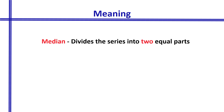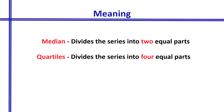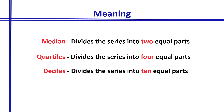First of all, the median is the breaking point that divides the series into two equal parts. Quartiles are those breaking points that divide the series into four equal parts. When there is one median to break a series into two equal parts, there have to be three quartiles. The deciles divide the series into ten equal parts, hence there have to be nine deciles.